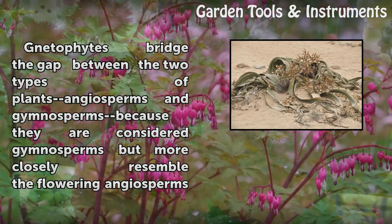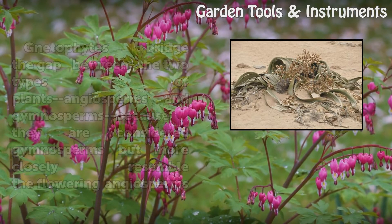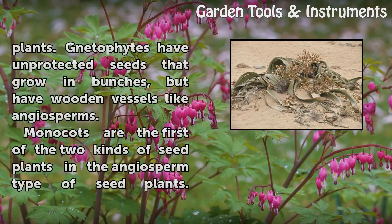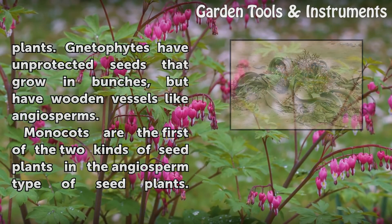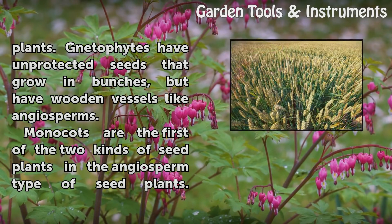Gnetophytes bridge the gap between the two types of plants — angiosperms and gymnosperms — because they are considered gymnosperms but more closely resemble the flowering angiosperms. Gnetophytes have unprotected seeds that grow in bunches, but have woody vessels like angiosperms.